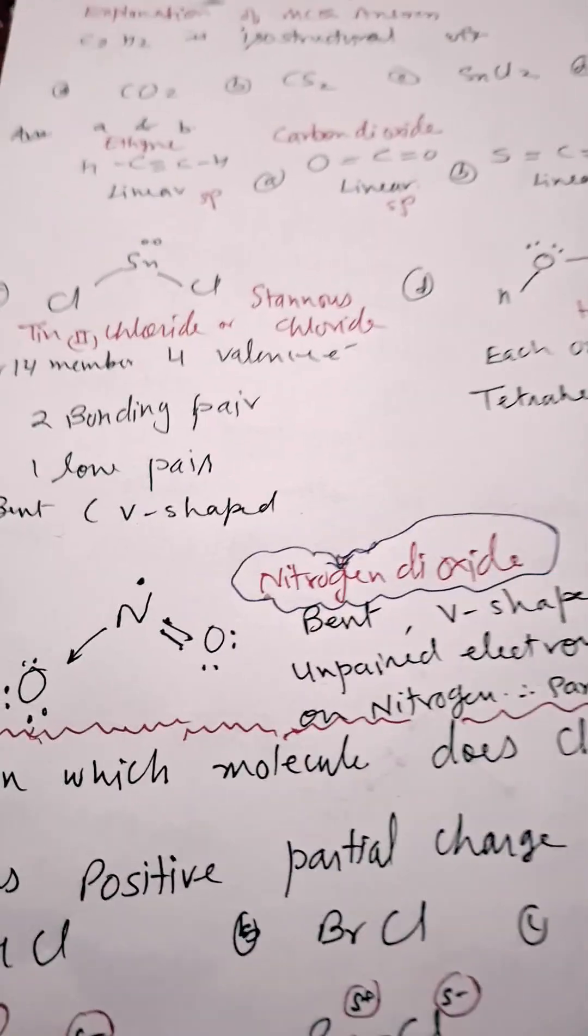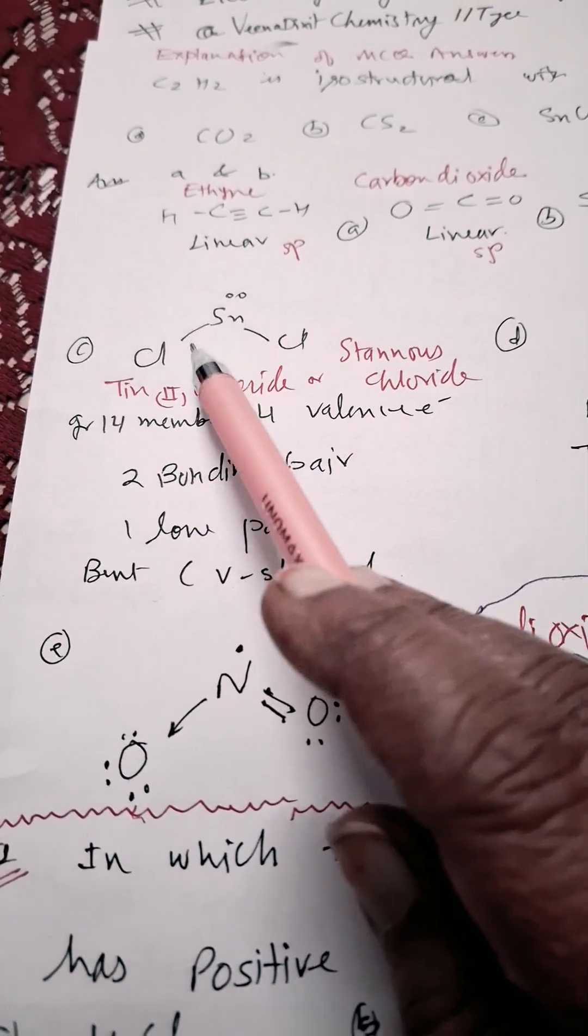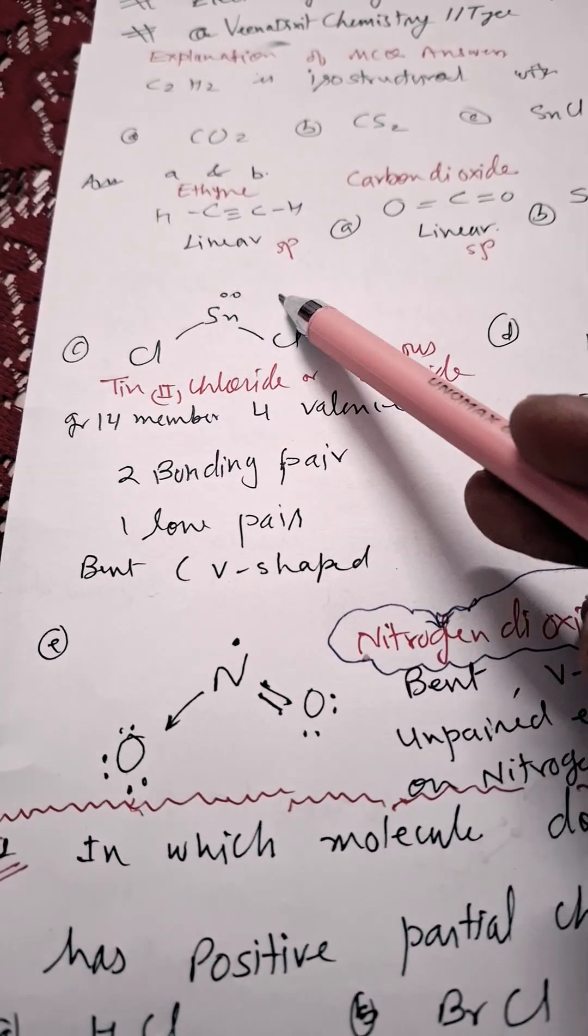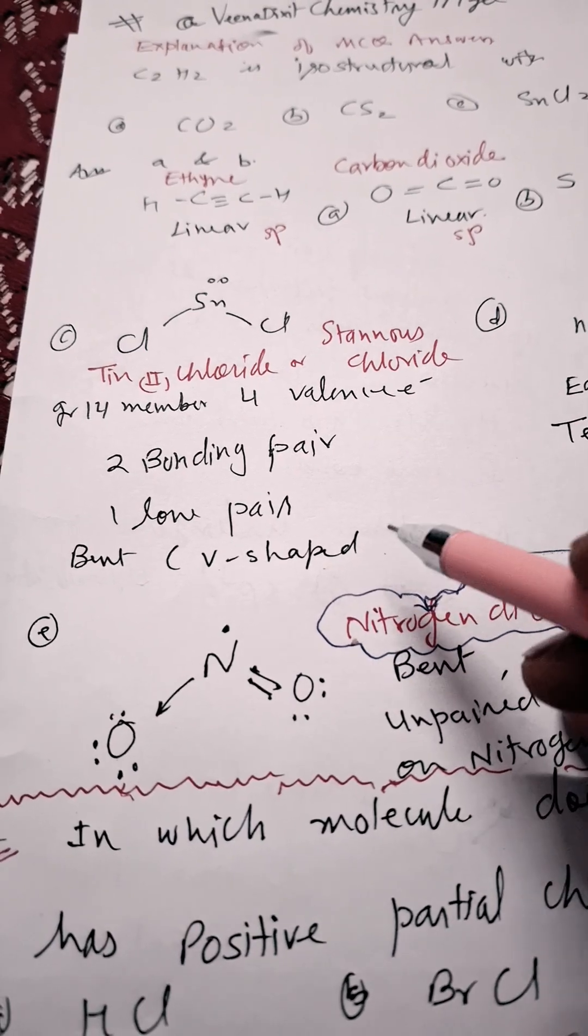Now in case of SnCl2, that is stannous chloride or tin-2 chloride, this is group 14 member with 4 valence electrons, 2 bonding electrons and 1 lone pair. So it is having V-shaped structure, bent shape, and hybridization will be SP2.